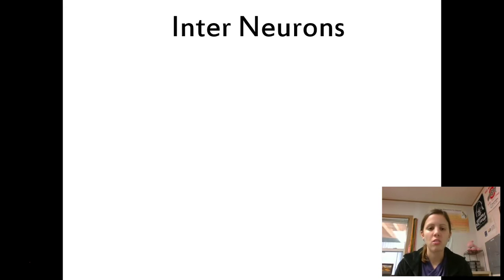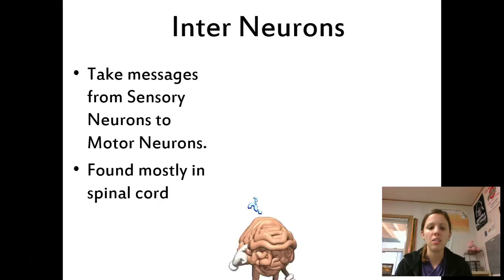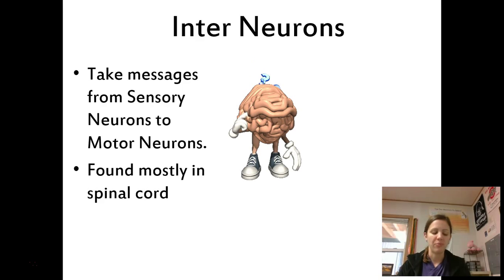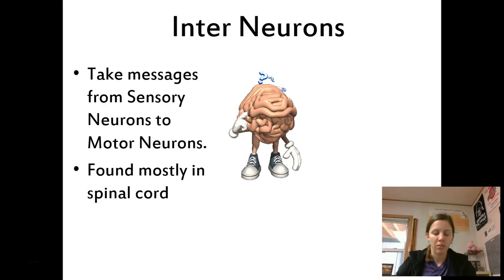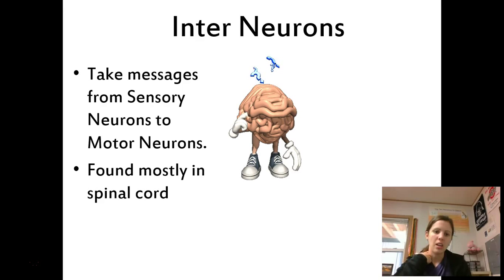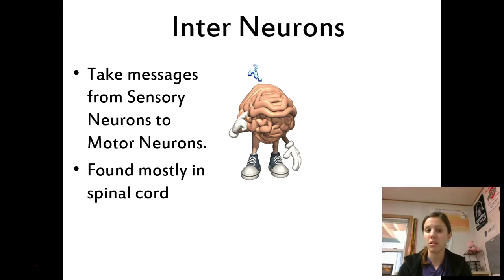The last type of neuron you need to know is called interneurons. These neurons essentially operate between the sensory and motor neurons, and primarily where you find interneurons is in your spinal cord. If I stub my toe, the sensory neurons carry the information to my spinal cord, and the interneurons take it from there all the way up to my brain. And vice versa, if I want to walk, motor neurons in my brain go to my spinal cord where interneurons take the message and give it to my legs.